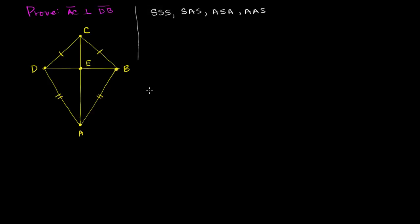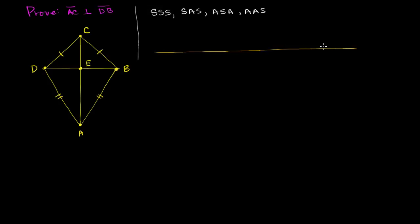I'm also going to do this as what we call a two-column proof. You don't have to do a two-column proof, but this is what you normally see in an introductory geometry class. The basic idea is that you make a statement and give the reason for it. I'll have two columns — a statement column and a reason column.